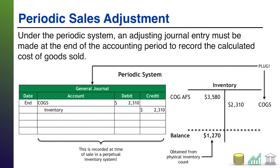In a periodic system, when you get to the end of an accounting period, you will not automatically know what the ending balance in your inventory is. The reason is that in a periodic system, you are not updating your inventory balance with every sale made — you're not tracking your cost of goods sold with every sale made. So what happens is a physical inventory count is performed.